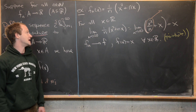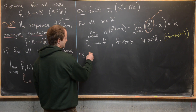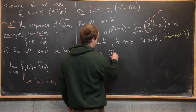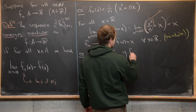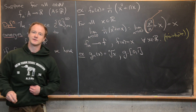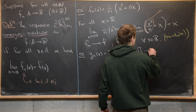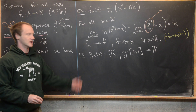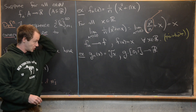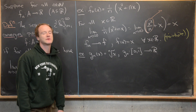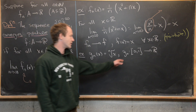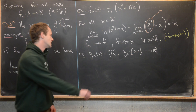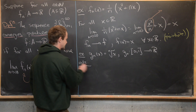Now let's look at another example. We'll call it g_n, and this is going to be the nth root of x. We're viewing this as a function from the closed interval [0, 1] to the real numbers, though it's not too hard to see it maps into [0, 1] as well. This sequence of functions has slightly different behavior depending on where you are in this closed interval.